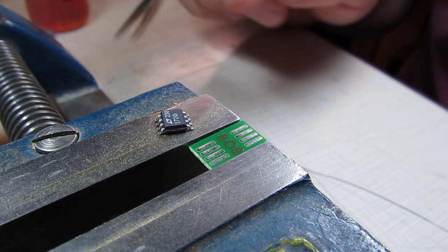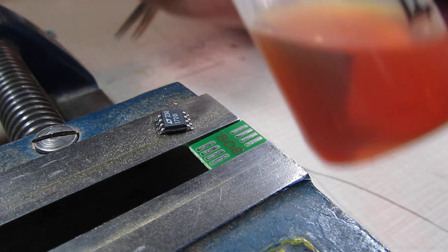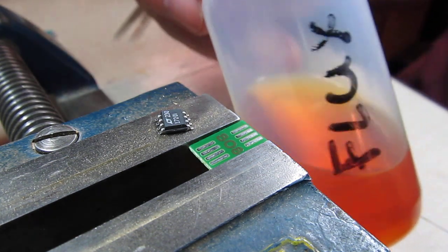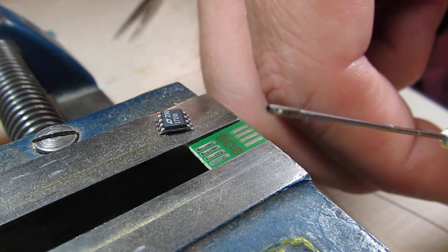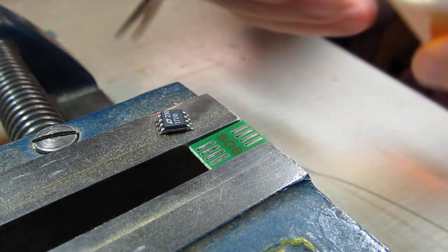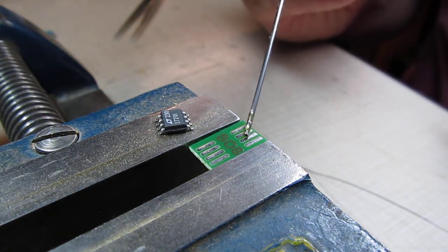Anytime I do surface mount soldering like this, I almost always will use some additional liquid flux. I just have some mounted in this little bottle with a needle on the end of it here. Makes it easy to apply to the board that I'm working on.